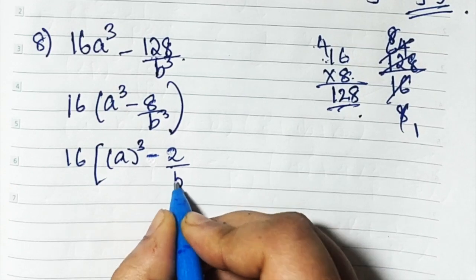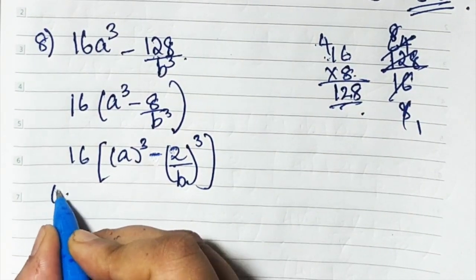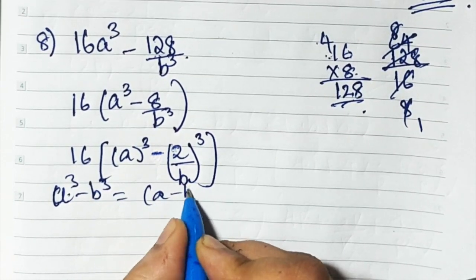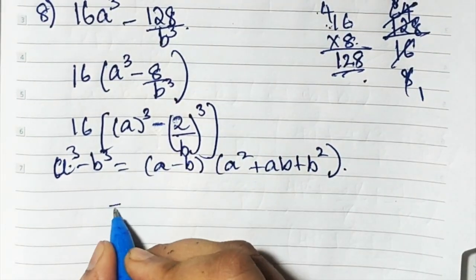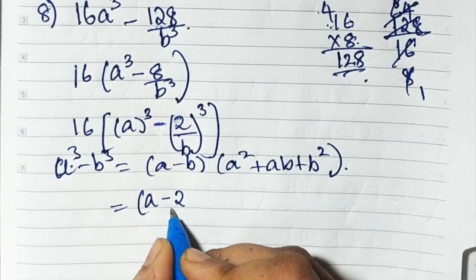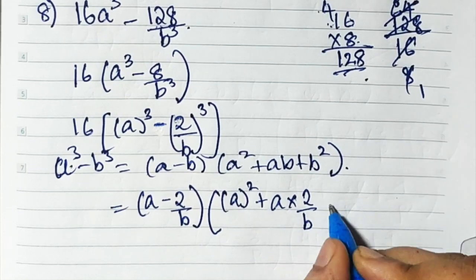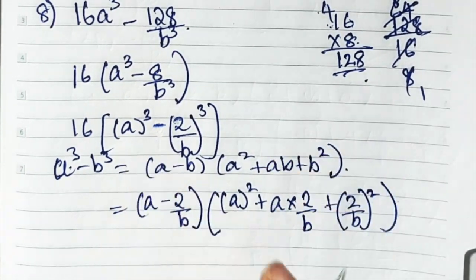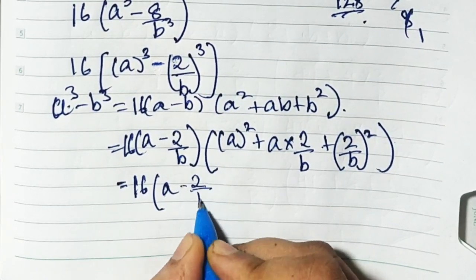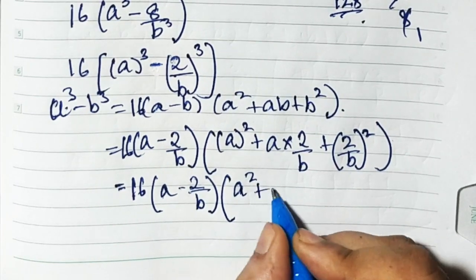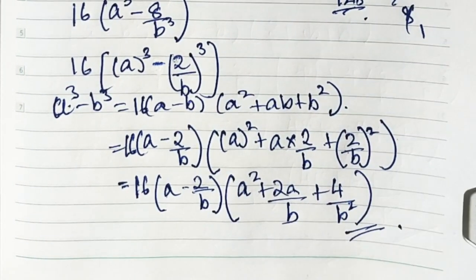Applying the formula a cube minus b cube equals a minus b times a square plus ab plus b square: a is a, b is 2 upon b. So we get 16 times (a minus 2 upon b), times a square plus a times 2 upon b plus (2 upon b) whole square. Simplifying: 16(a - 2/b)(a² + 2a/b + 4/b²).